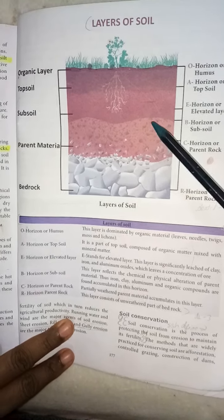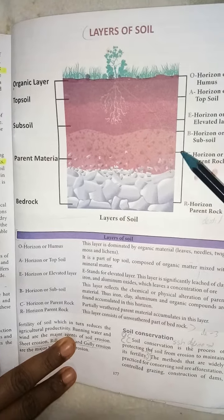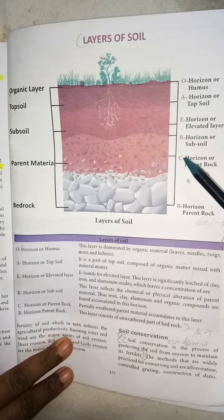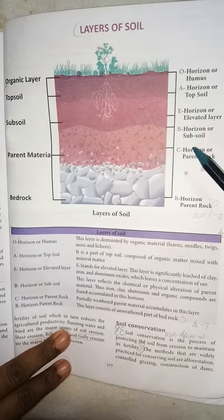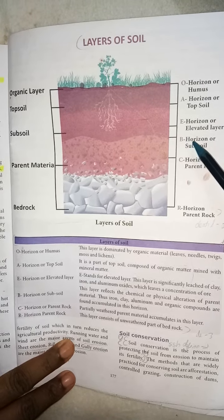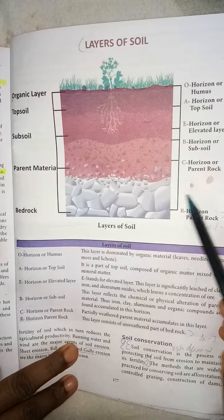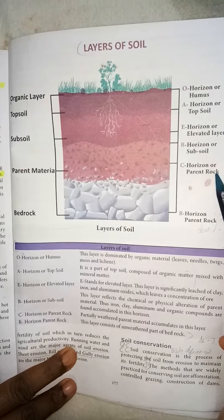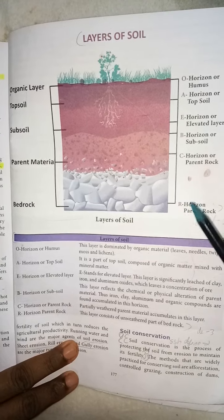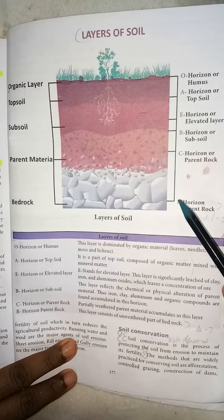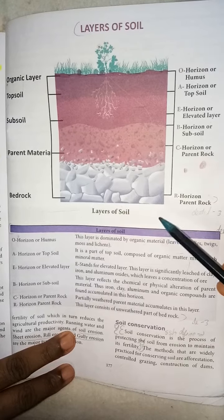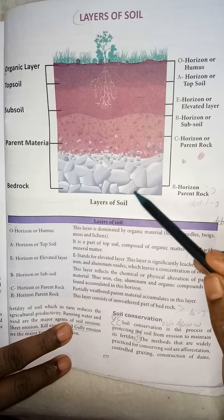The subsoil layer reflects the chemical or physical alteration of parent material. Thus, iron, clay, aluminium and organic compounds are found accumulated in this horizon. Then, parent material: this is the horizon or parent rock layer where partially weathered parent material accumulates. Bedrock is the layer that consists of the unweathered part of bedrock.